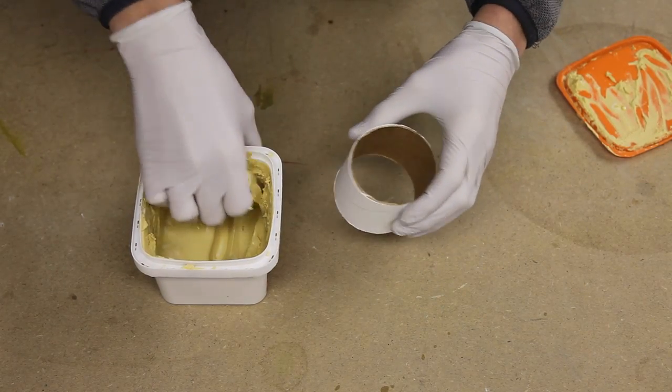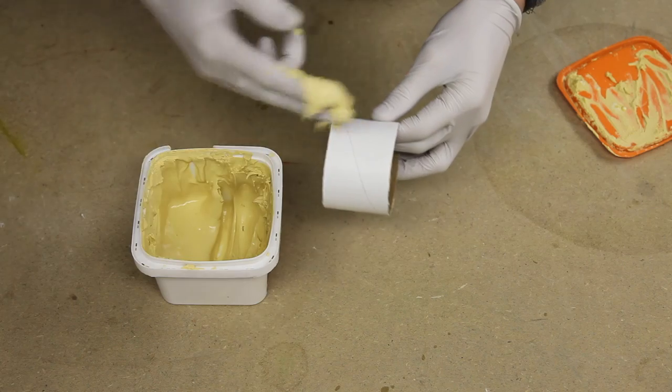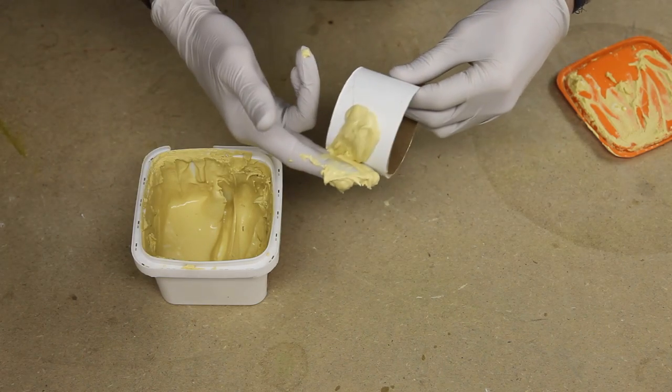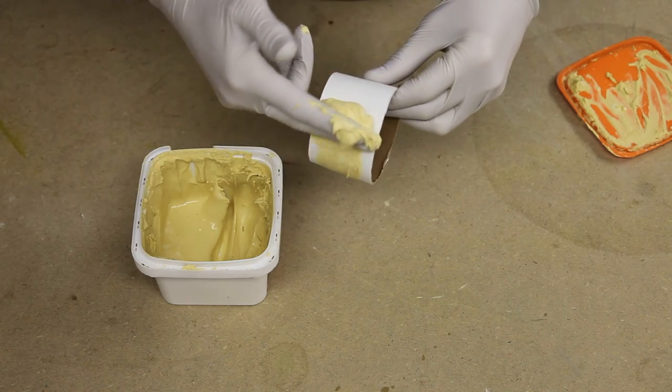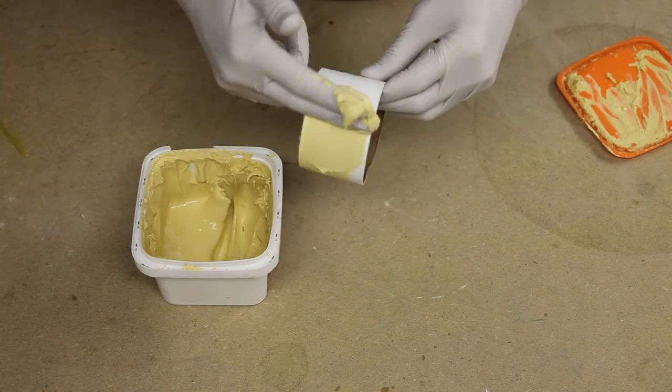To remove these lines, I apply an excess of wood filler onto the body tube and try to smooth them out as much as possible. Don't worry about applying too much, as most of it will be sanded away in the next step.